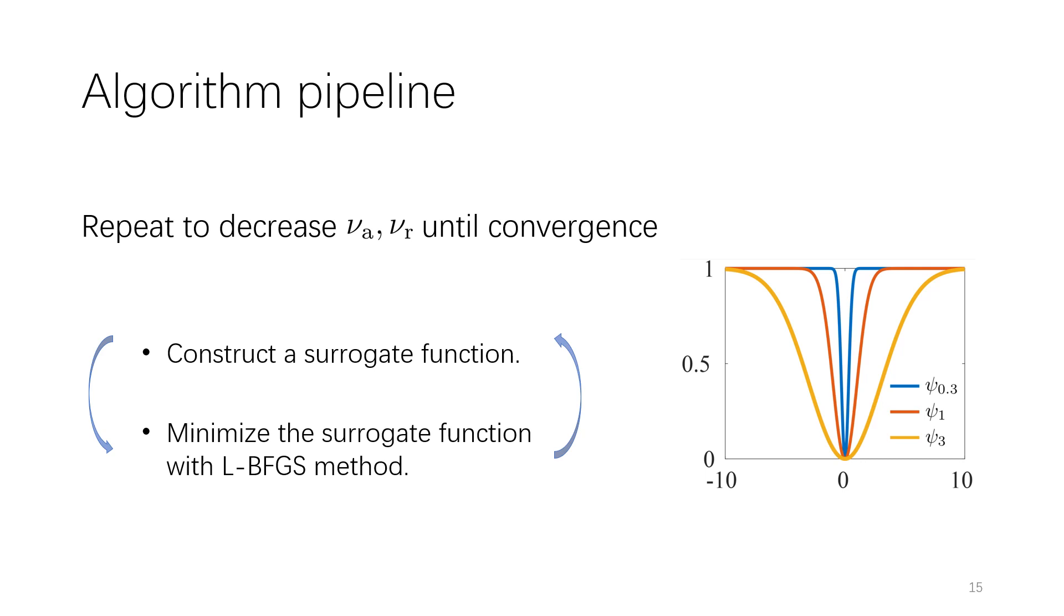In summary, we can obtain an optimal solution by alternately constructing a surrogate function and minimizing it for the fixed parameters of Welsch's function in first two terms. We choose relatively large values to achieve coarse alignment and decrease them to refine the results gradually.